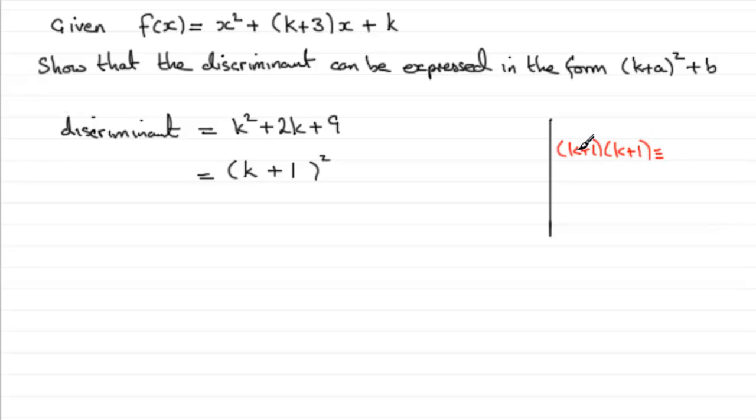It's identical to K times K, which is K squared. Then we've got 1K plus another 1K, so plus 2K. And then 1 times 1, well, that's 1.